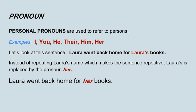Personal pronouns are used to refer to persons. Some examples are: I, you, he, their, him, and her. Let us look at this sentence: Laura went back home for Laura's books. Instead of repeating Laura's name, which makes the sentence repetitive, Laura's is replaced by the pronoun her. The sentence now reads: Laura went back home for her books.